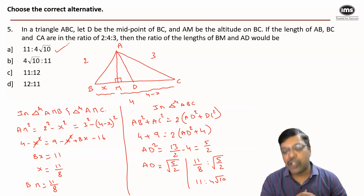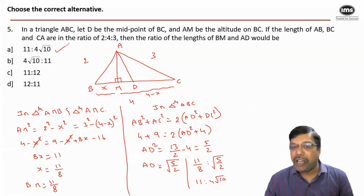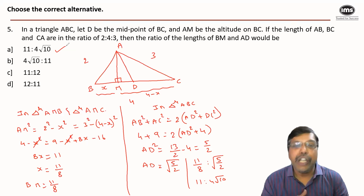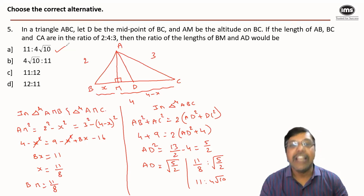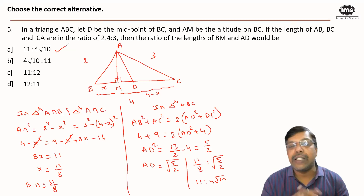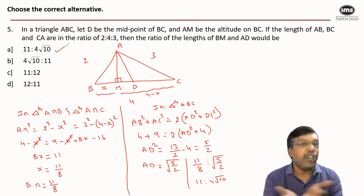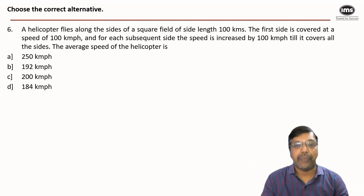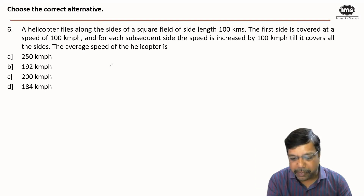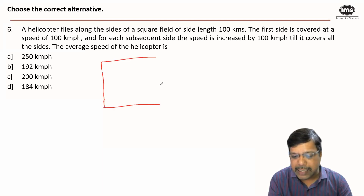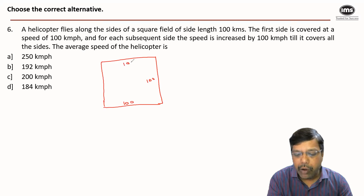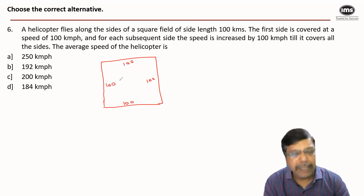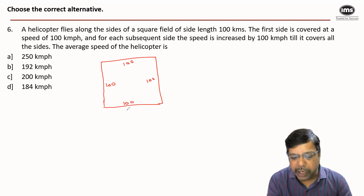Now let's see question number 6. A helicopter flies along the sides of a square field of side length 100 km. The helicopter flies along all four sides. The first side is covered at a speed of 100 kmph, the second at 200 kmph, the third at 300 kmph, and the fourth at 400 kmph. If you observe closely, this is a problem of average speed.